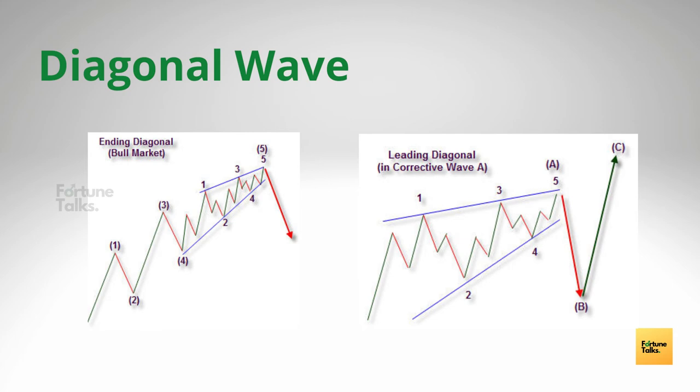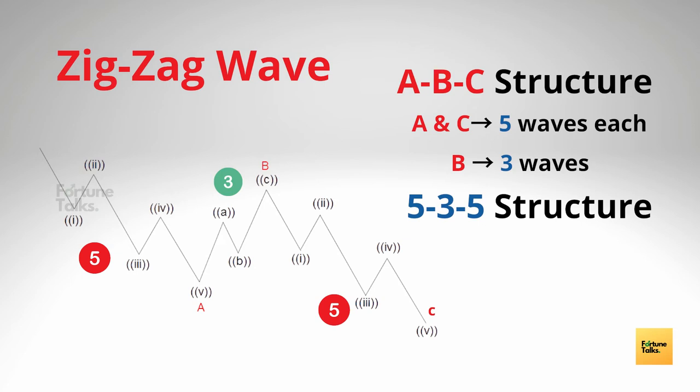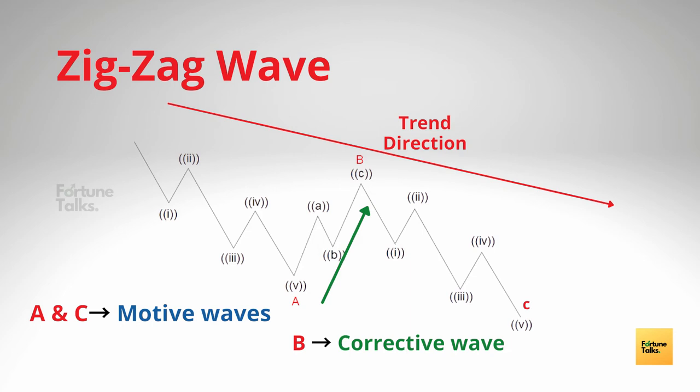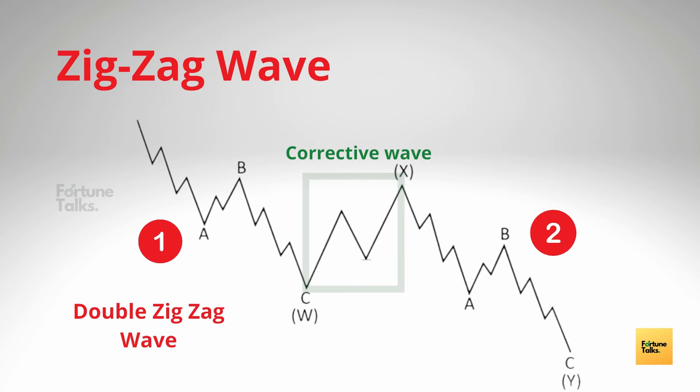Now let's start our discussion on corrective waves. The zigzag is a corrective wave made up of three waves labeled as A, B, and C that move strongly up or down. The A and C waves are motive waves, whereas the B wave is the corrective move. Zigzag patterns are sharp declines in a bull rally or advances in a bear rally that substantially correct the price level of the previous impulse pattern. Another specialty about zigzags is that they can be formed in a combination known as a double or triple zigzag, where two or three zigzags are connected by another corrective wave between them.